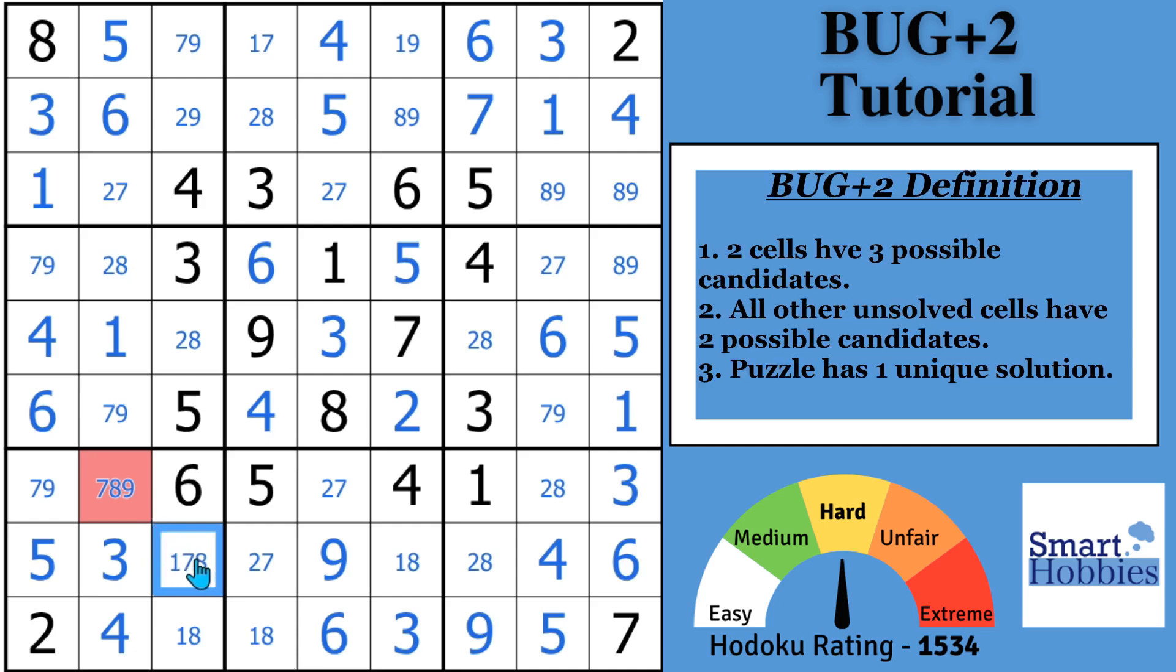In today's puzzle, we actually have two cells that have three candidates. So a BUG Plus 2, by definition, is pretty similar to a BUG Plus 1. You have two cells now that have three possible candidates. All other unsolved cells have two possible candidates, and the puzzle has a unique solution.